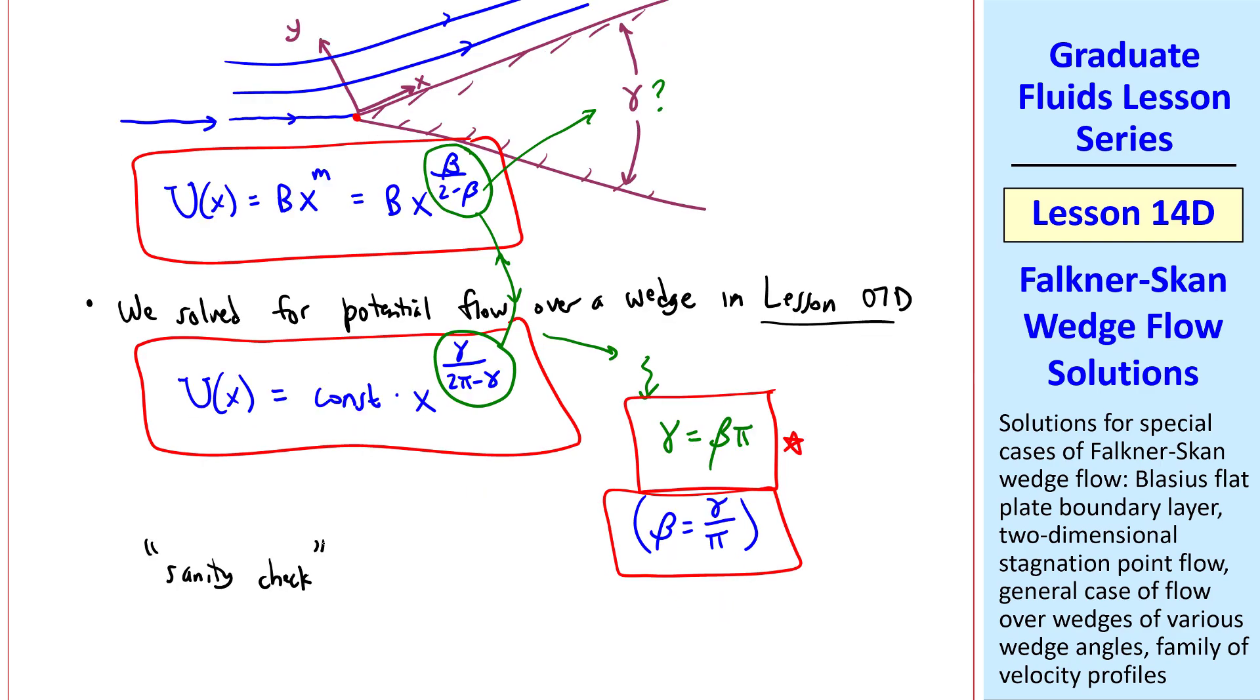As a quick sanity check, as I like to call it, when beta is zero, gamma is zero, which means this reduces to a flat plate. When beta equals 1, gamma equals pi, which means this expands to a vertical plate, which is 2D stagnation point flow. And then for any beta in between these two limits, we have flow over this wedge, which is why we call this, in general, Falkner-Skan wedge flow.